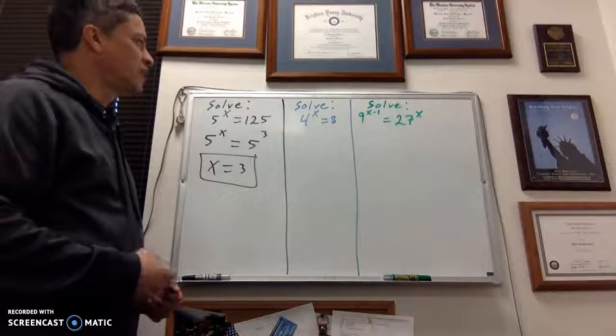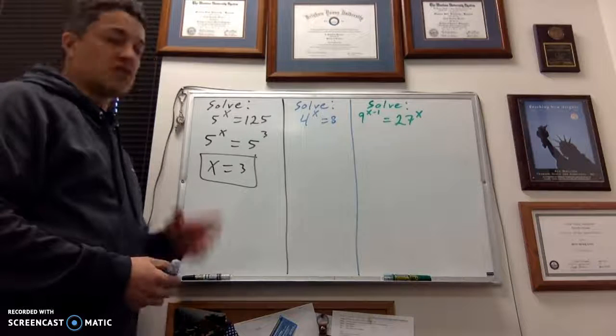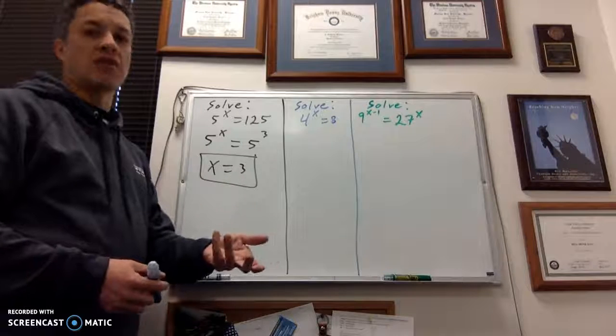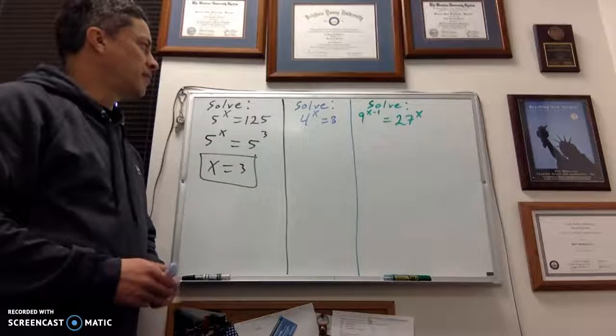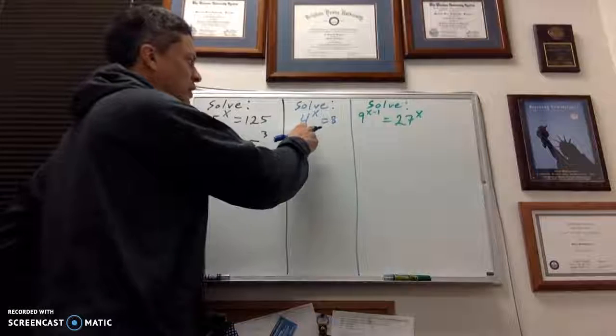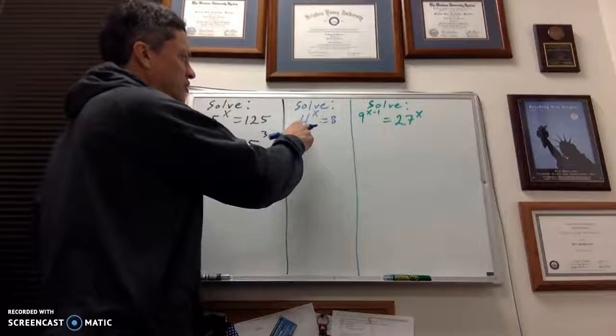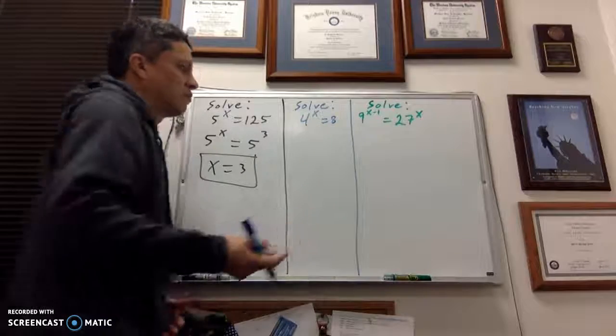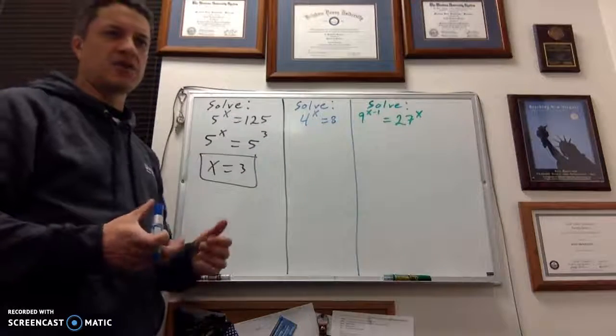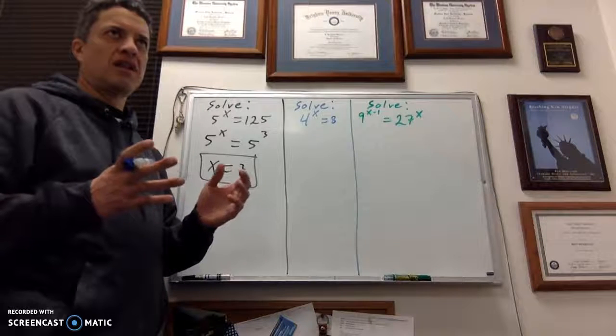Let's look at this next one. I've got 4 to the x equaling 8. Now there's a couple ways you can do this actually. You can convert this thing into a logarithm and solve it that way, but I'm not going to go there. Instead, I'm going to set this thing up so that it has like bases. I've got a 4 here and I've got an 8 here.